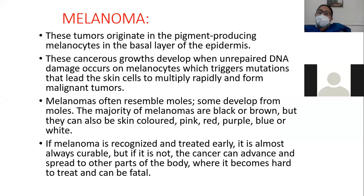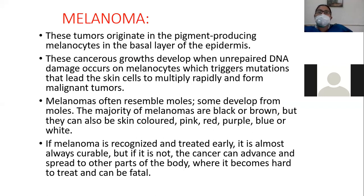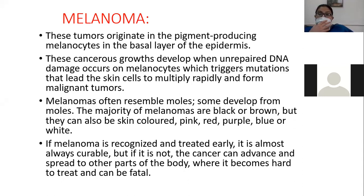Now, melanoma. Melanoma is basically a malignant neoplasm of melanocytes. These tumors originate in the pigment-producing melanocytes in the basal layer of the epidermis. Whenever there is malignancy in the melanocytes, we call it melanoma. These cancerous growths develop when there is unrepaired DNA damage. The pathogenesis is a defect in DNA synthesis, causing unrepaired DNA damage that triggers mutations leading skin cells to multiply rapidly and form a malignant tumor.